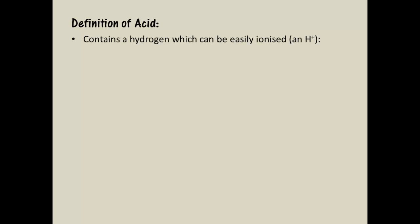Now let's move on to the definition of an acid and consequently the definition of a base. Previously you might have said that an acid contains a hydrogen ion — this is correct. All acids must contain hydrogen, but more specifically they must contain a hydrogen that can be ionised. Not all hydrogen atoms in compounds are acidic. Think about all the hydrogen atoms that an organic molecule has, like hexane, and we all know that most organic molecules are not acids. All of the acid compounds shown contain a hydrogen which can be ionised.